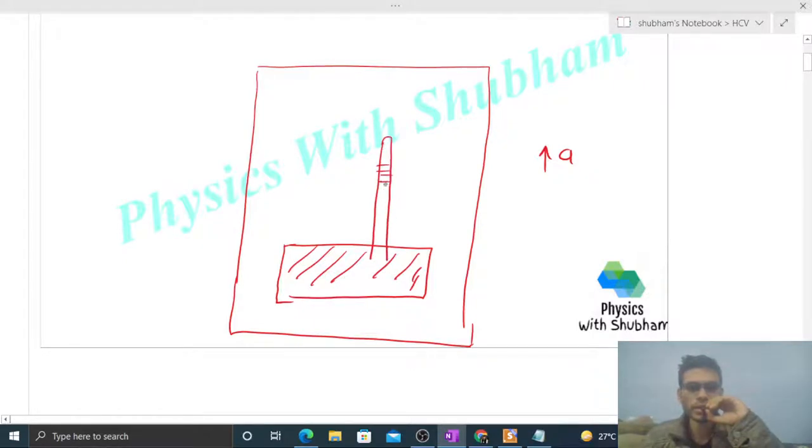This is the barometer tube, and initially the reading given to us is 76 centimeter, something like this.